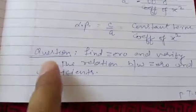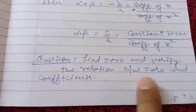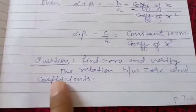Now take a question: find zeros and verify the relation between zeros and coefficients. So here is an example, x² - x - 6.